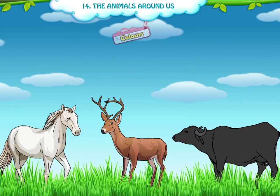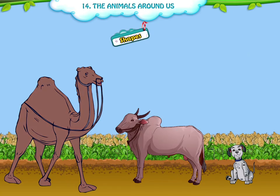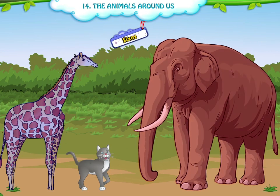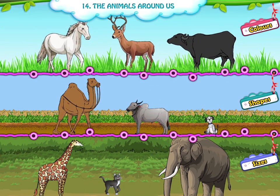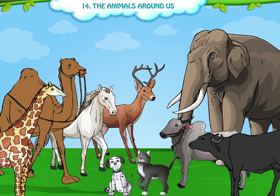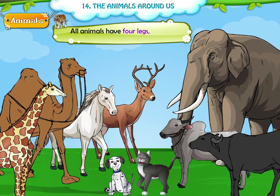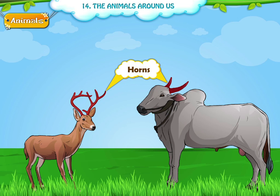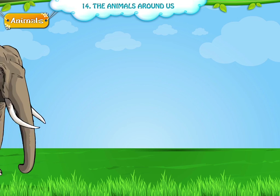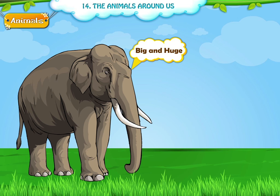These animals are of different colours, shapes and sizes. The word animal includes a variety of living creatures. There are different kinds of creatures. Animals have four legs, two ears and one tail. Some animals have horns like oxes and deers. Some animals are big and huge like the elephant, and some are small like the cat.